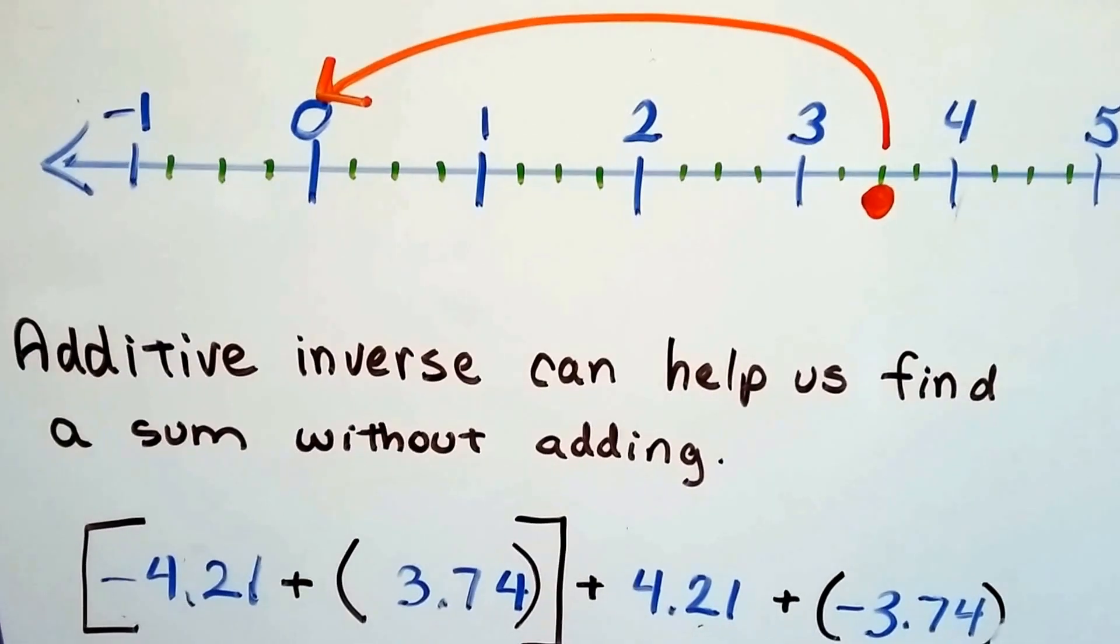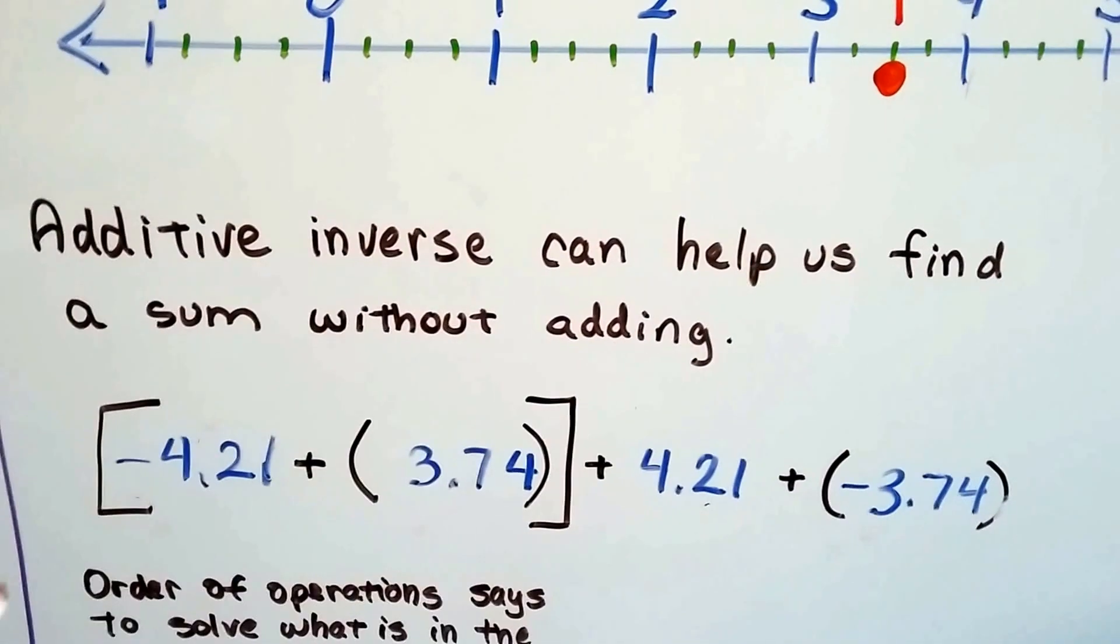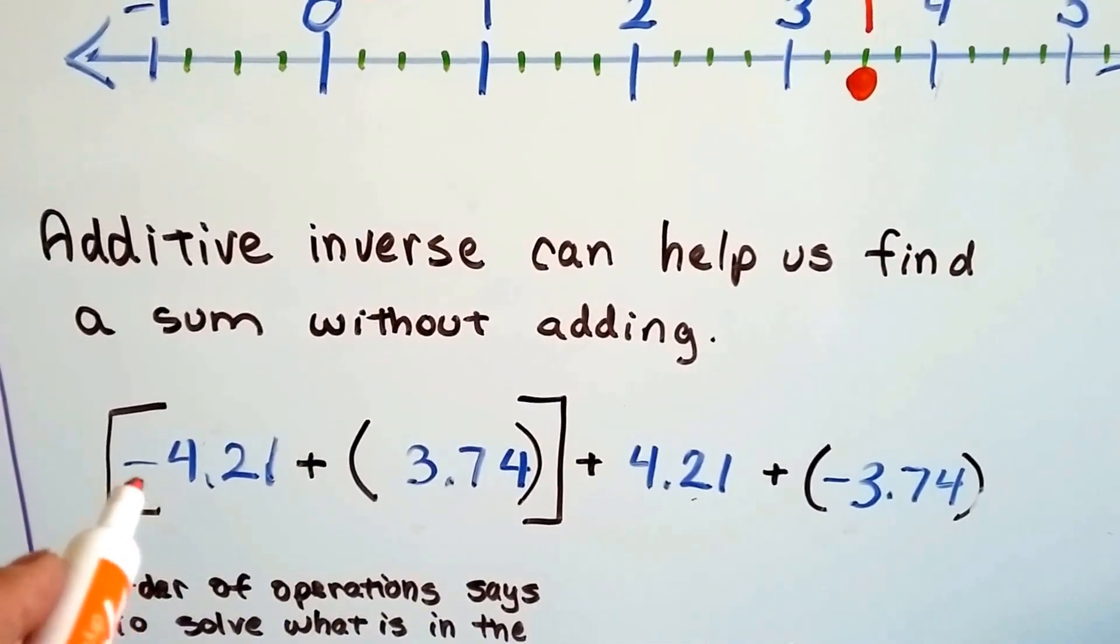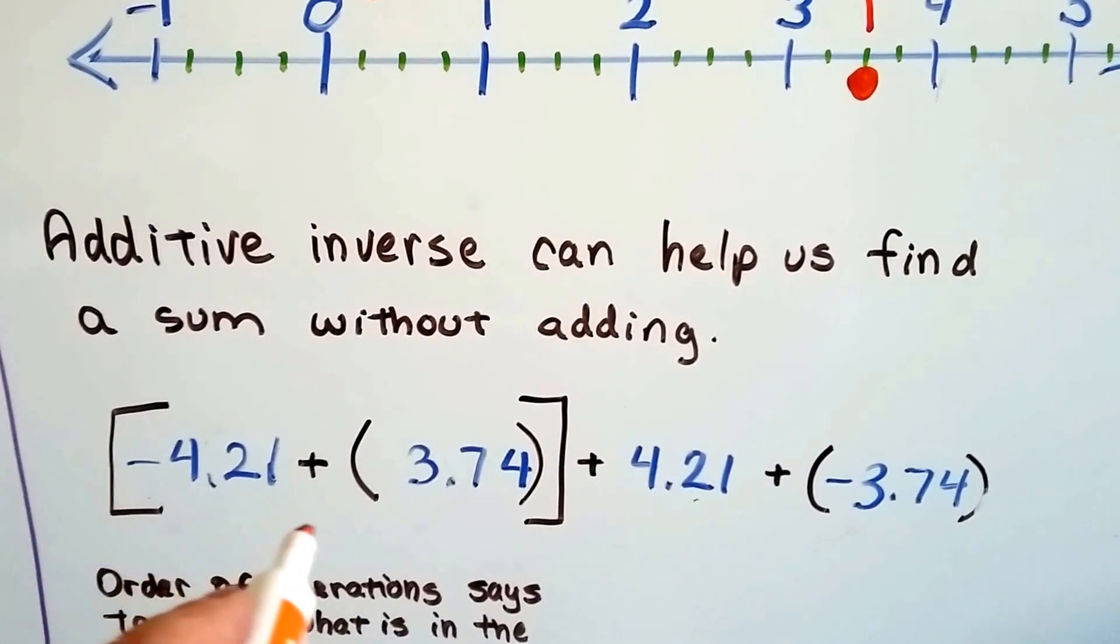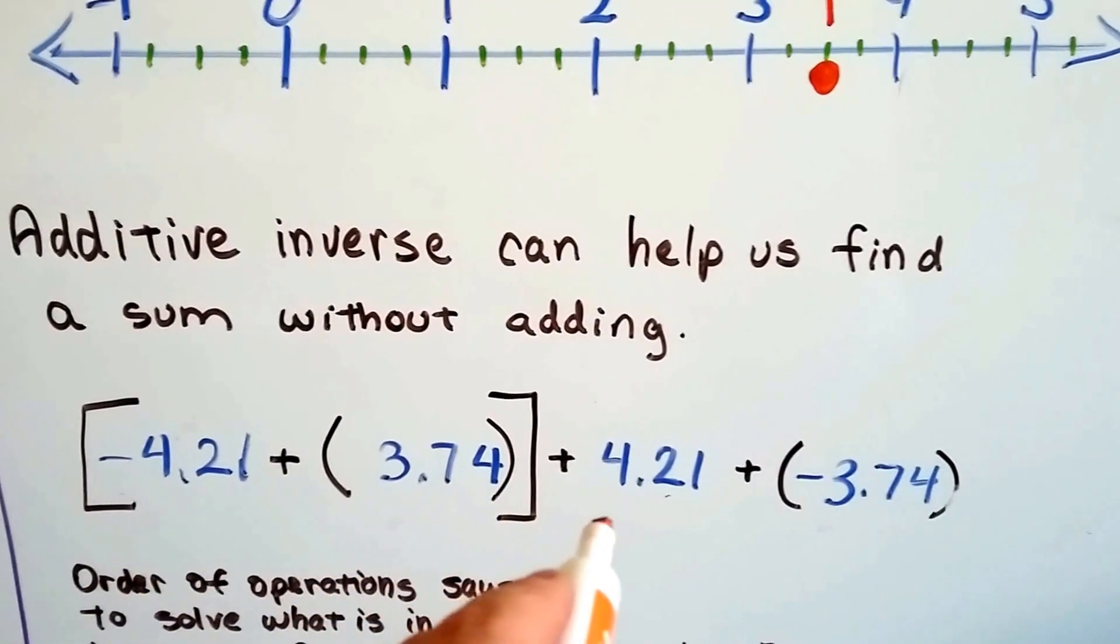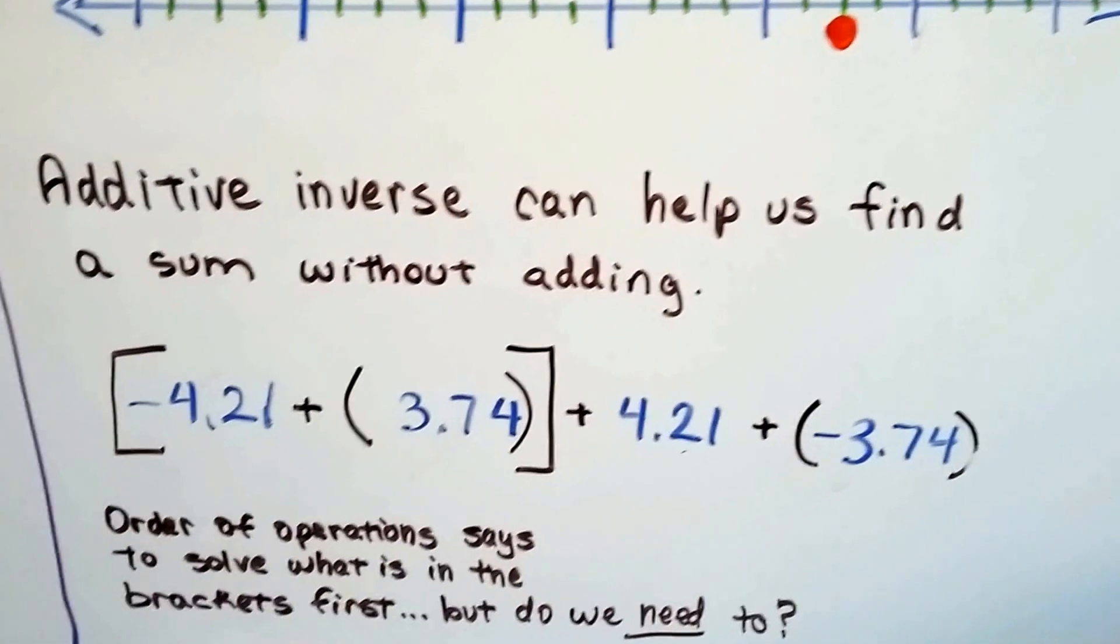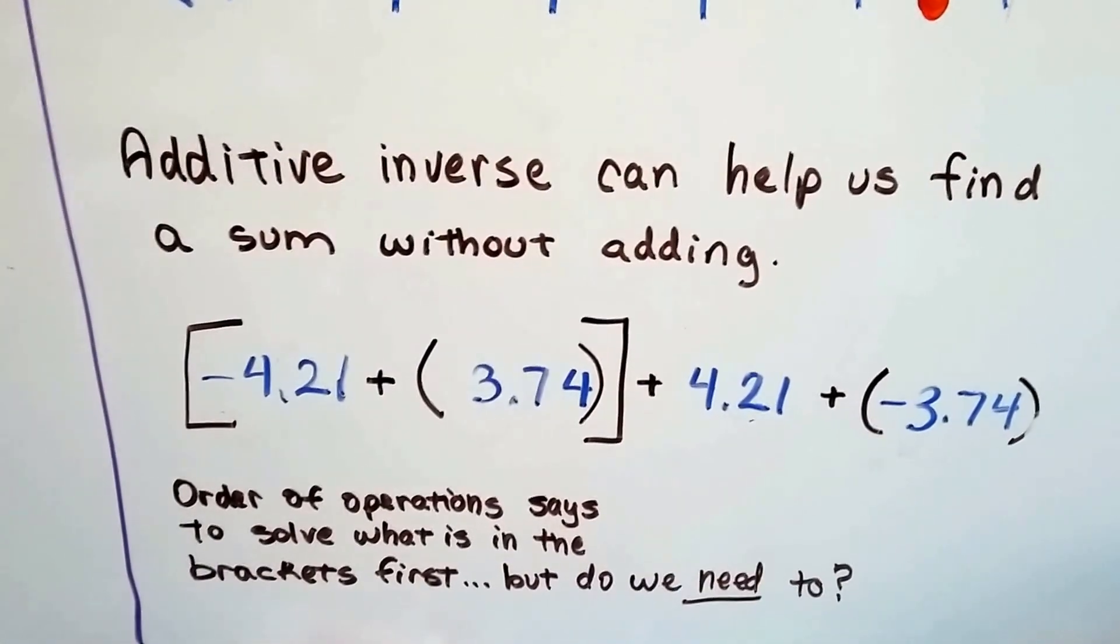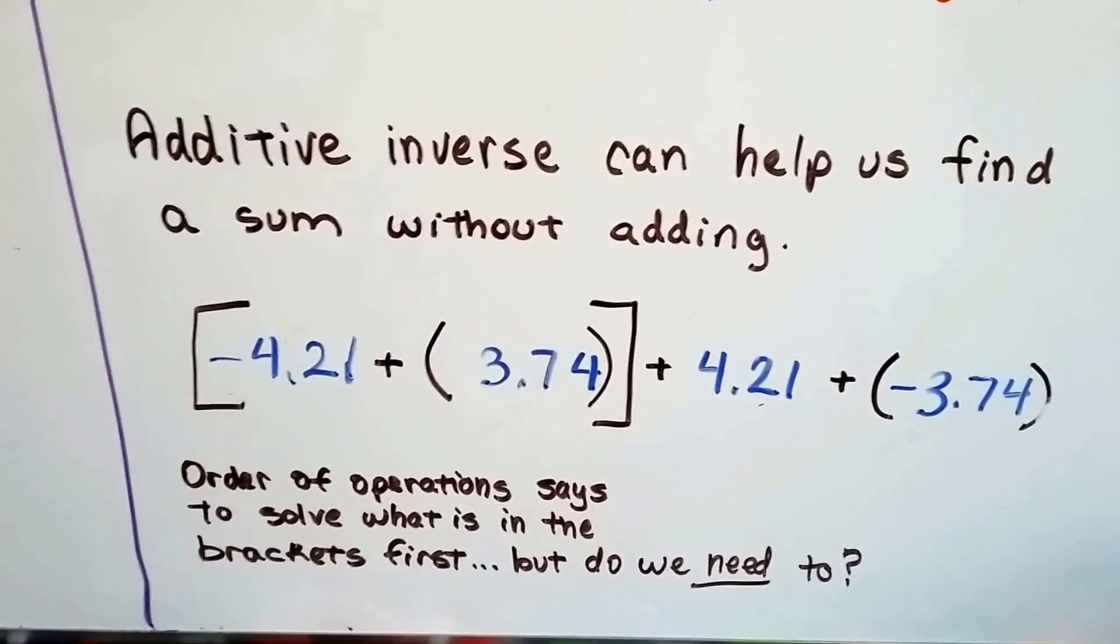Additive inverse can help us find the sum without even adding. Look at this equation. It's pretty long. Negative 4.21 plus 3.74 plus 4.21 plus negative 3.74. Do you already notice what I see? Do you notice what I notice?